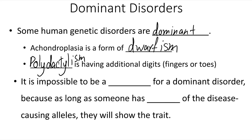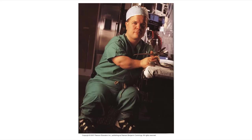For a dominant genetic disorder, it is impossible to be a carrier, because if an individual has even one of the disease-causing alleles, they will show that trait. Here we see an image of a therapeutic surgeon who has achondroplasia, and he specializes in surgeries to deal with some of the consequences of this genetic condition.